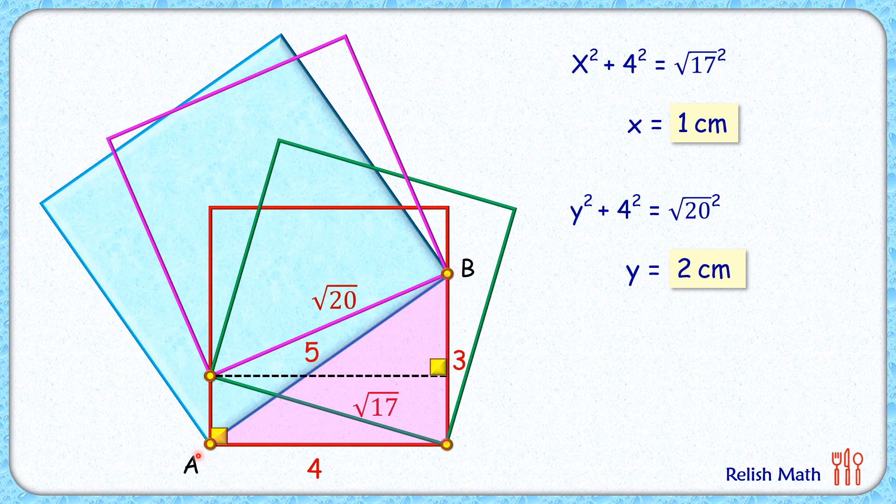And as AB length, the side length of the square is 5 cm, the area of square is 25 cm². And that's our answer.